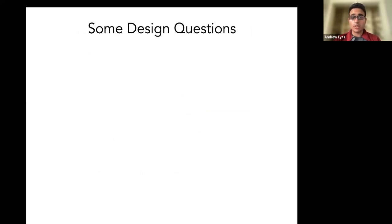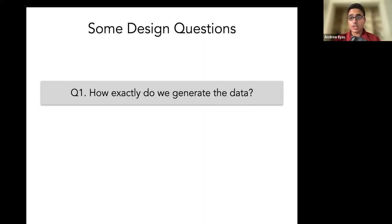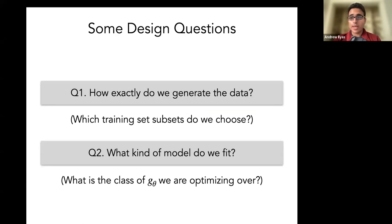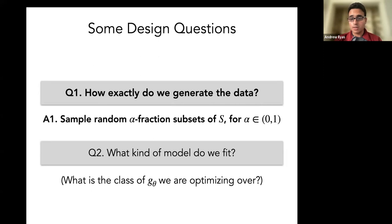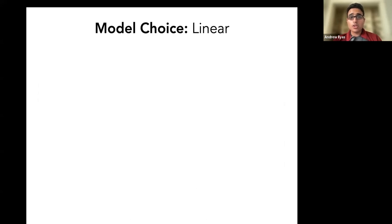There are some design questions to instantiate this for real. One question is: how exactly do we generate the data, and what subsets should we choose? The second question is: what sort of model do we fit? The answer to the first question is we sample random fixed-size fractions of the total training set S. The more interesting question is what sort of model to fit. Since we wanted two properties — approximating model outputs and being simple and easy to analyze — we went for the simplest thing we could think of: a simple linear model.